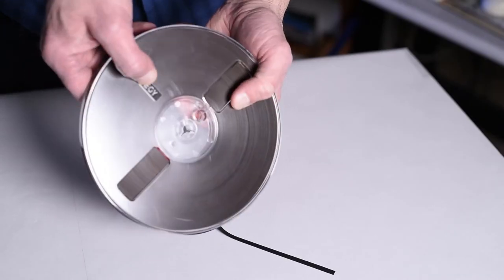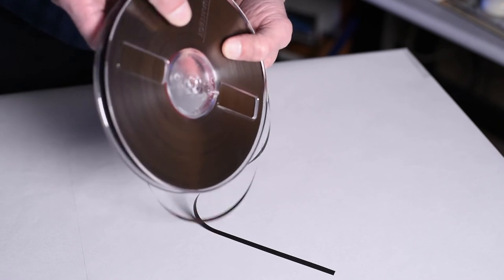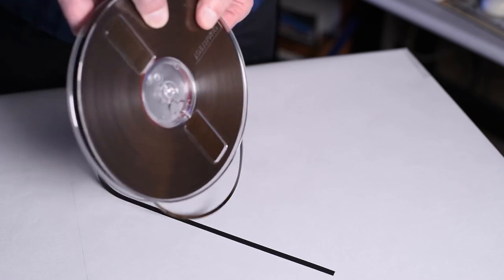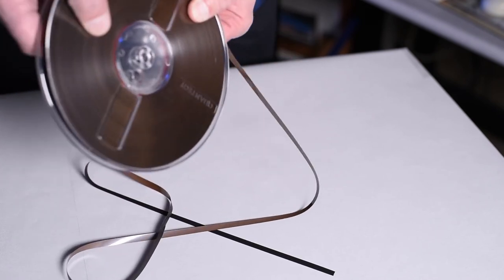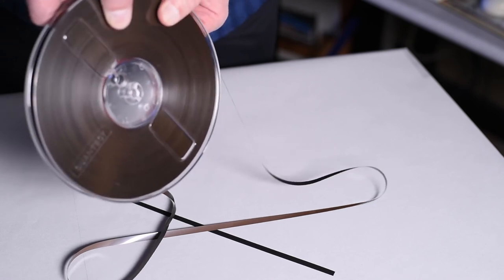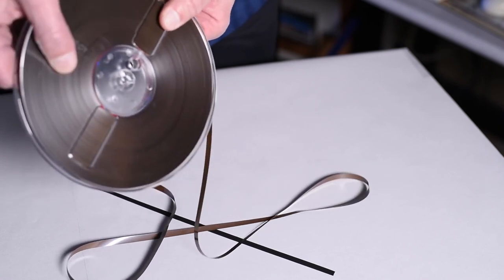A non-destructive test to identify a binder degradation problem on reel tapes is the gravity test. To perform the test, the loose end from a reel of tape is suspended. A tape without binder degradation will freely unwind from the reel without much resistance.